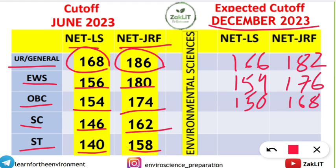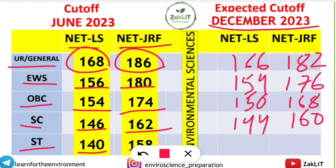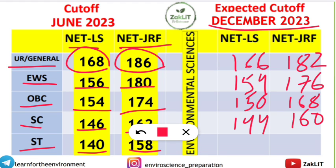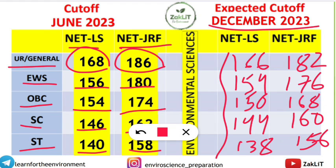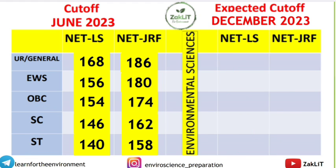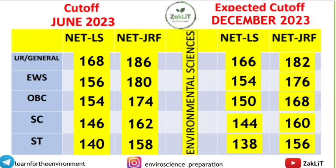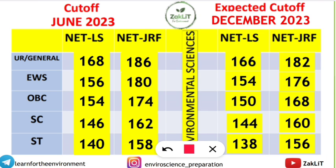For SC candidates, the expected NET LS cutoff is around 144 or above, and NET JRF will be around 160 or above. For ST candidates, 138 is the expected cutoff for NET LS and 156 for NET JRF. These are the safe scores — if you are scoring these marks you have maximum chances of qualifying. You can pause the video to see the clear cutoff table on the next slide. Don't worry if your score from the response sheet does not meet these figures, as the cutoff may vary.